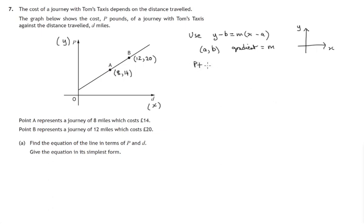So point on the line. Do we have the coordinates of a point on the line? Well we've got a choice 8, 14 or 12, 20. Let's use 8, 14. So that's a and b, 8 and 14.